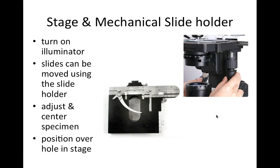We have the stage, which is the flat platform, and there's an opening in the middle through which light from the illuminator passes through the condenser, surrounding and illuminating our specimen on the microscope slide. The slide can be moved around using the mechanical slide holder, which can be adjusted on an XY axis using the knobs hanging down on the right-hand side below the stage, so you can position your specimen at every possible location on that two-dimensional surface.